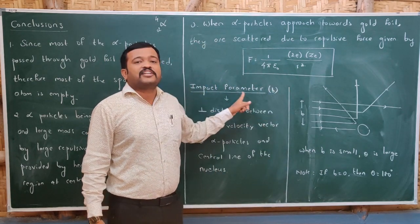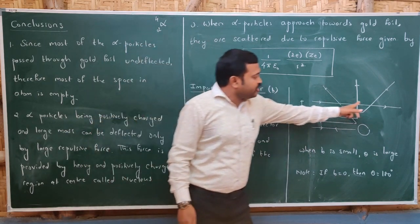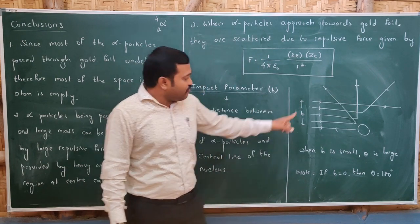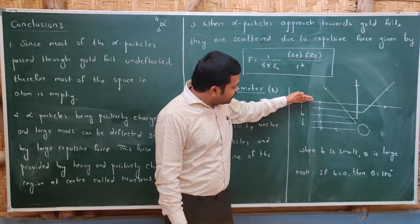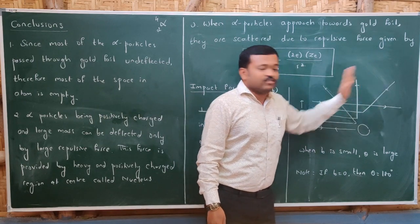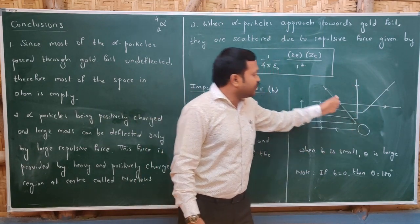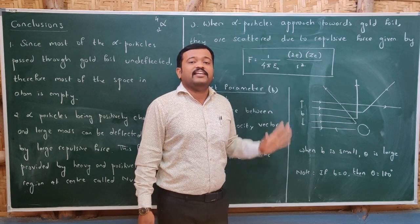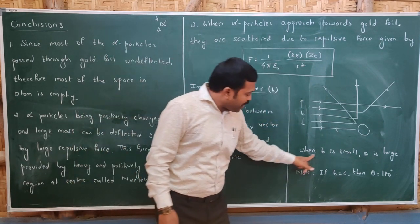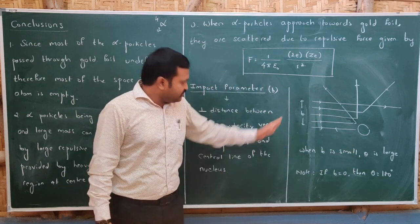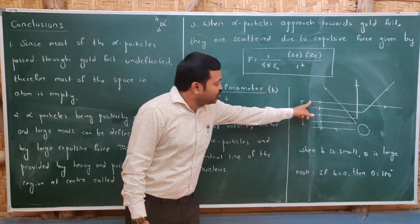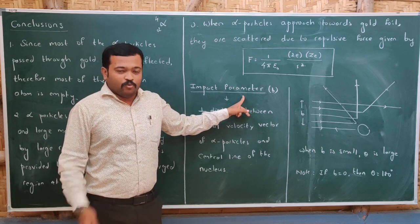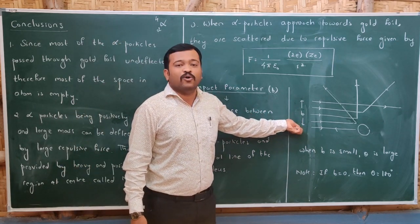This distance r can also be referred to as the impact parameter, denoted by b. The trajectory of the alpha particle depends upon this parameter. Diagrammatically, if the alpha particle passes far away, it is undeflected. If the distance is reduced, there will be deflection, and reducing it further increases the deflection. So as the impact parameter decreases, the angle of scattering increases. The impact parameter is defined as the perpendicular distance between the initial velocity vector of the alpha particle and the central line of the nucleus.